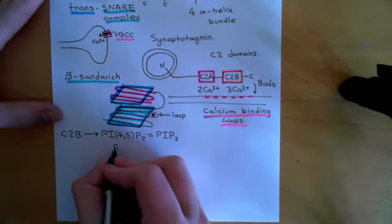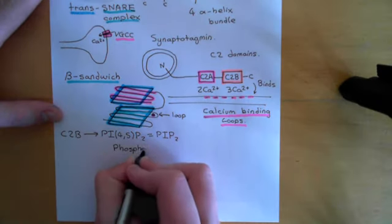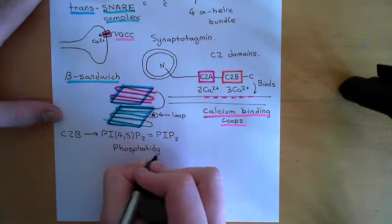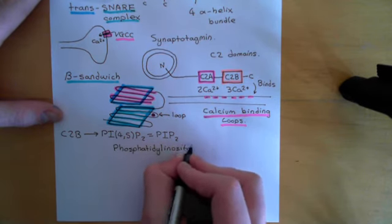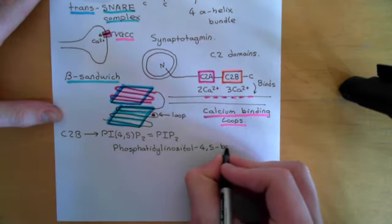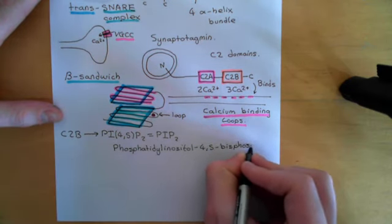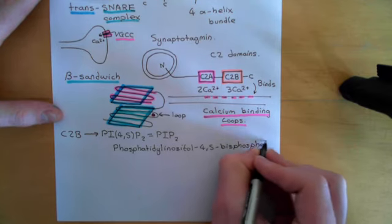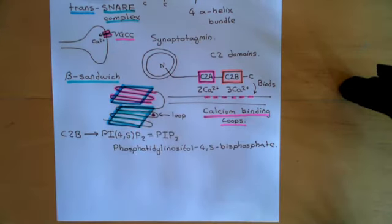What does this stand for? This stands for phosphatidyl — that's the first P. The I is for inositol — phosphatidyl inositol 4,5-bisphosphate. This is a normal phospholipid that you find within the phospholipid bilayer of the plasma membrane.